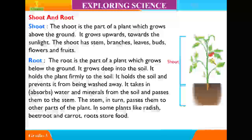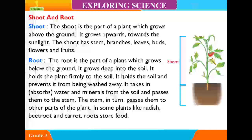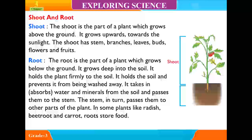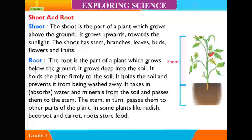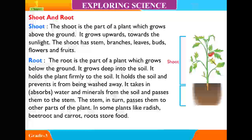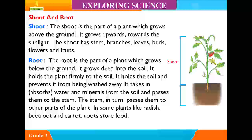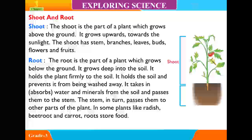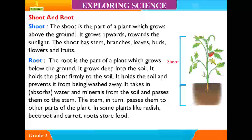The root is the part of a plant which grows below the ground. It grows deep into the soil. It holds the plant firmly to the soil. It holds the soil and prevents it from being washed away. It absorbs water and minerals from the soil and passes them to the stem. In some plants like radish, beetroot and carrot, roots store food.